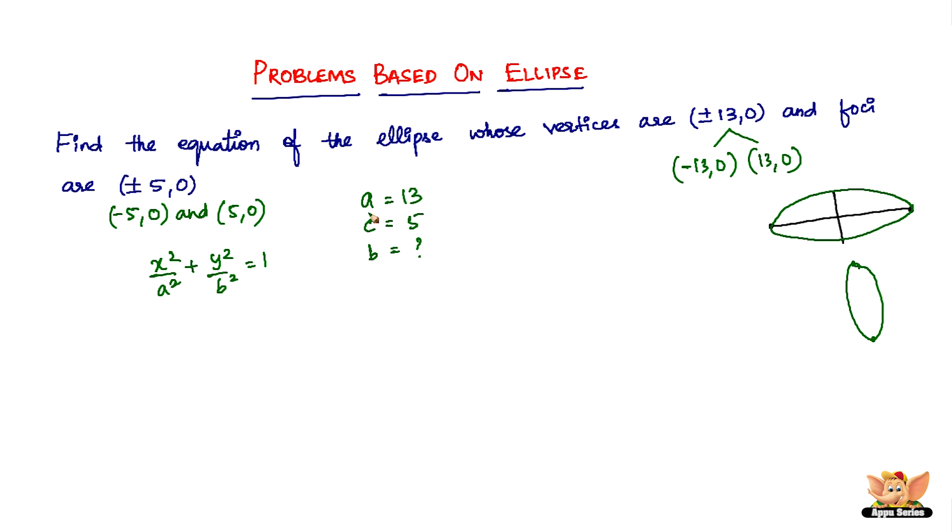We can easily find b if you know a and c because of this formula: a² = b² + c². So b² = a² - c², or b = √(a² - c²).